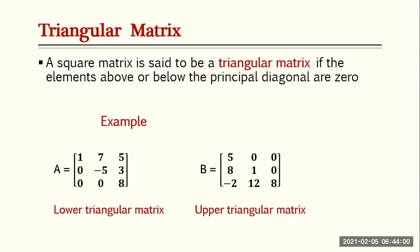A triangular matrix: a square matrix is said to be a triangular matrix if the elements above or below the principal diagonal are zero. There are two types: the lower triangular matrix, where all elements below the principal diagonal are zero, and the upper triangular matrix, where all elements above the principal diagonal are zero. Matrix A is a lower triangular matrix and matrix B is an upper triangular matrix.